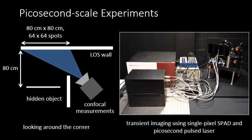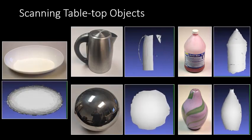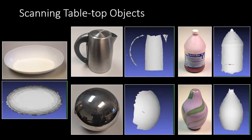The first system uses a single photon avalanche diode and a pulsed laser to capture transients at picosecond resolutions. We use this system to take measurements of a variety of tabletop objects in the looking around the corner setting.